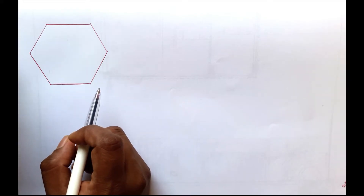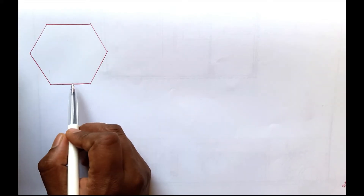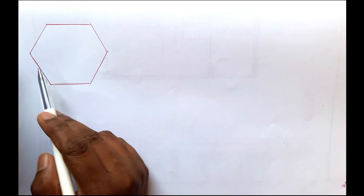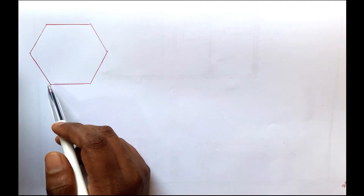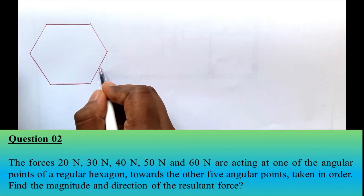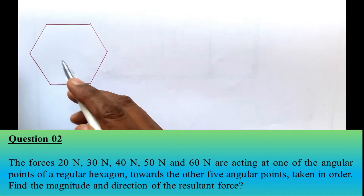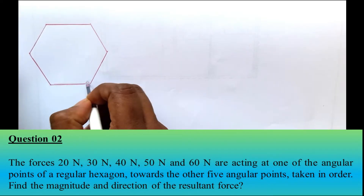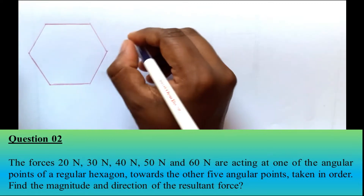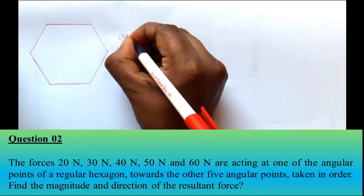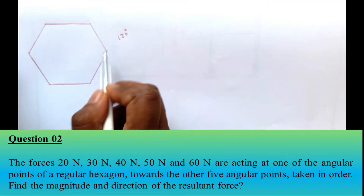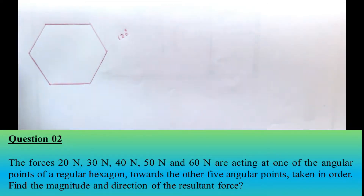So what is a regular hexagon? A hexagon has all equal sides and equal internal angles. If you use a regular hexagon, all the internal angles are 120 degrees. That is a regular hexagon.